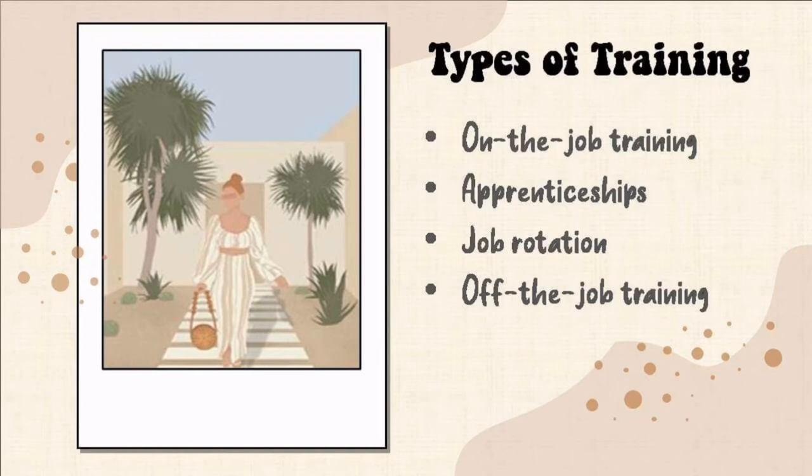The second type is apprenticeship. It is a kind of job training that involves following and studying a master of the trade on the job instead of in school. Examples of industries that offer apprenticeships include healthcare, food preparation or serving, manufacturing, and public safety. We will elaborate on this more later.